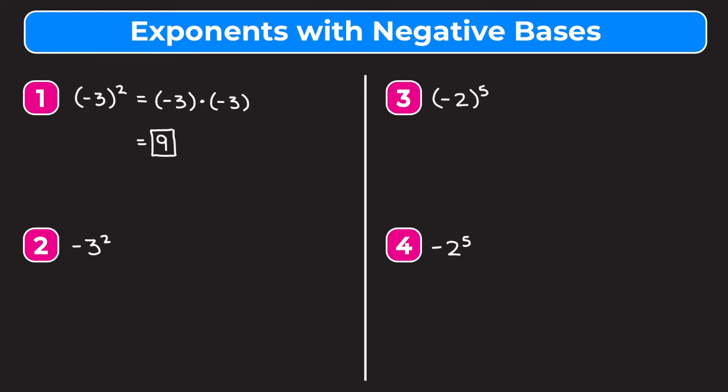Now let's look at example 2, which looks similar to example 1 except this negative 3 is not in parentheses. Example 2 is actually different than number 1 and the answer will come out different. Example 2 is saying that we have this 3 that is raised to the second, so I'm going to keep this negative on the outside and we're only raising this 3 to the second power.